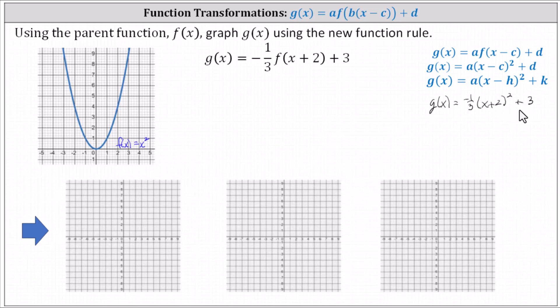Plot the vertex and then use a table of values to determine additional points, but that's not the point of this question. The point of this question is to practice function transformations, which is the approach we'll take. Recall if g of x is a transformation of f of x, we can write g of x as g of x equals a times f of the product of b in the quantity x minus c plus d.